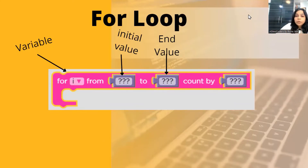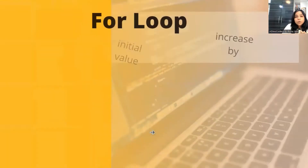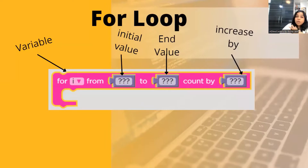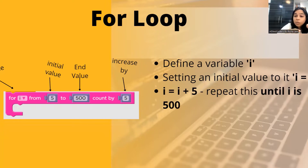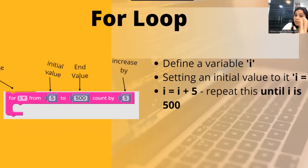Then we say 'count by' some value. So the entire structure means: define a variable with an initial value and an end value, and the value of this variable keeps on increasing by that counter number. We are writing a for loop and giving it instructions to repeat itself and stop when the value of i becomes equal to its end value.